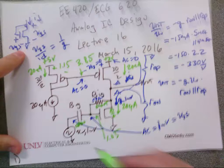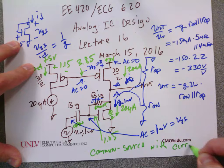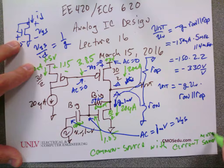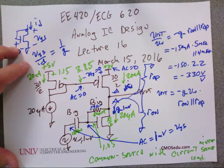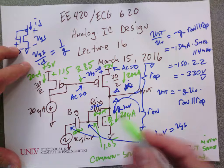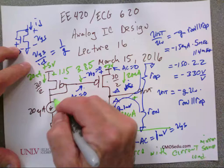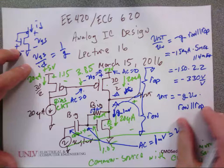What kind of topology is this? It's a common source with current source or current mirror load. What's the load? That's the load. What's the amplifying device? That's the amplifying device — common source. There's V_out. There's V_in. What's this device used for? That's the bias circuit.